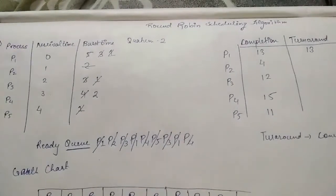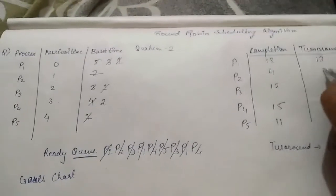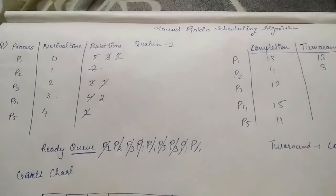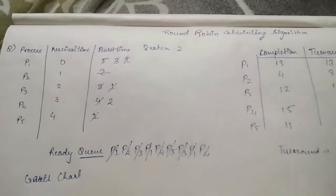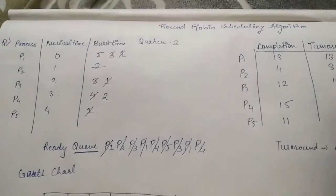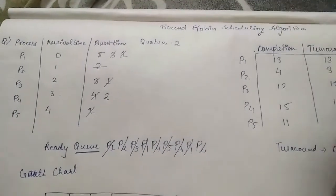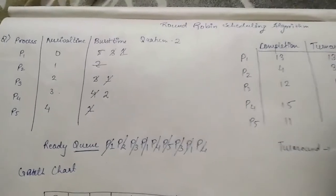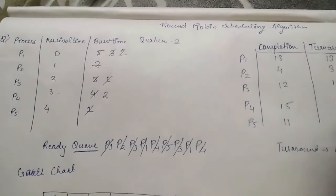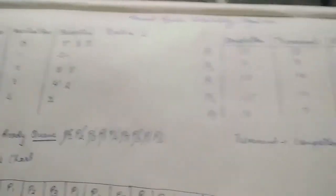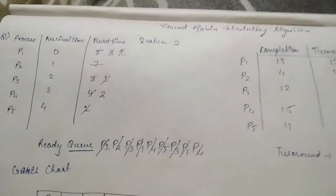For P2: 4 minus 1 equals 3. For P3: 12 minus 2 equals 10. For P4: 15 minus 3 equals 12. For P5: 11 minus 4 equals 7. These are the turnaround times for P1, P2, P3, P4, and P5.